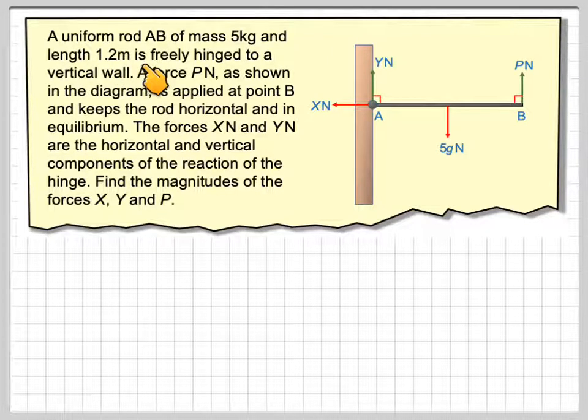A uniform rod AB of mass 5 kilograms and length 1.2 meters is freely hinged to a vertical wall. So we've got a vertical wall, we've got a rod here, and it's hinged at this point. A force P Newtons, as shown in the diagram, is applied at point B and keeps the rod horizontal and in equilibrium.